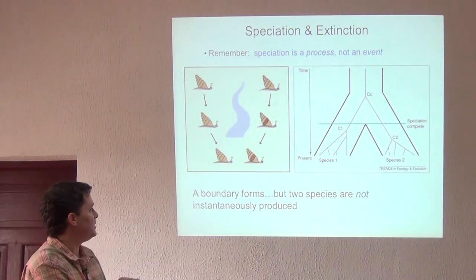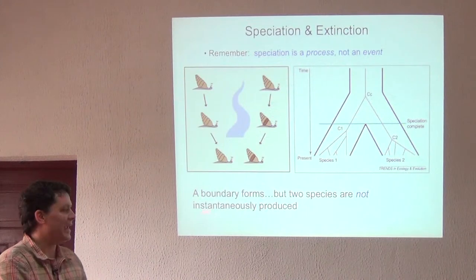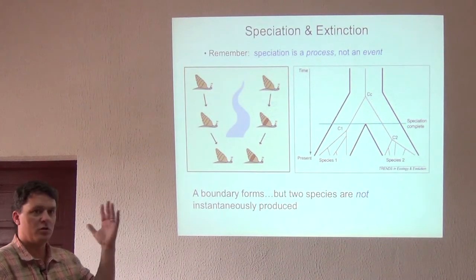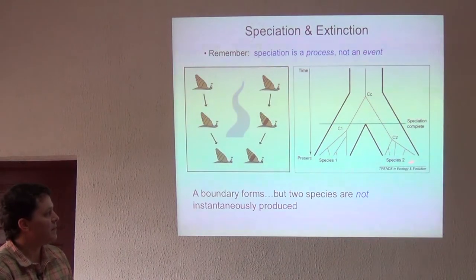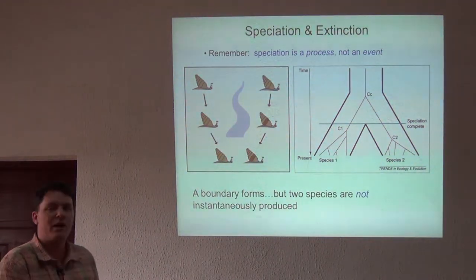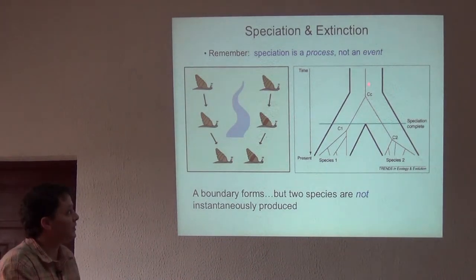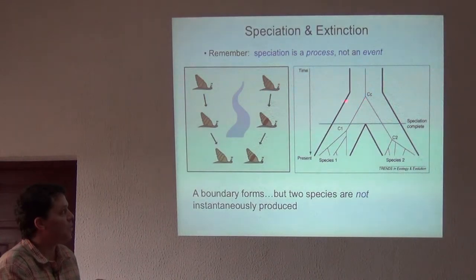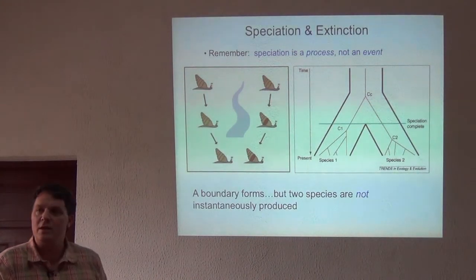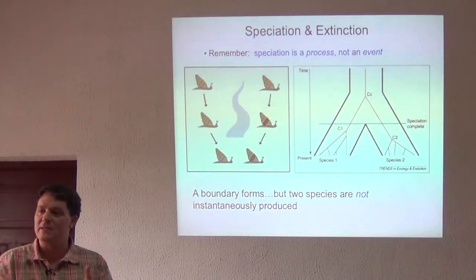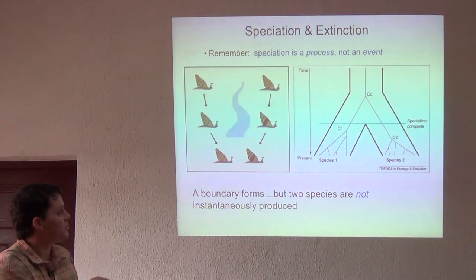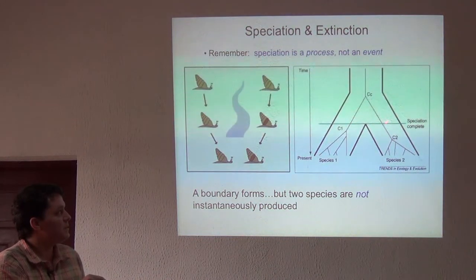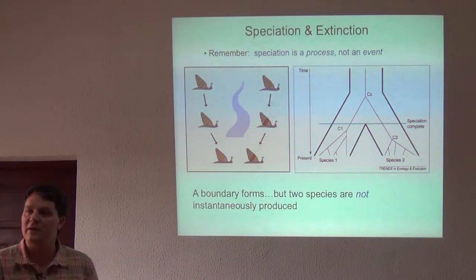That happened through time — it's an allopatric speciation event. Species are not instantaneously produced; it takes time. Here's an evolutionary tree turned upside down, with the past at the top and present-day lineages at the bottom. These different lineages begin diverging at some point in the tree, but it's not until further along that speciation is really complete. This process of divergence takes time, and eventually these things are completely separated, just like the situation in the tree over here.